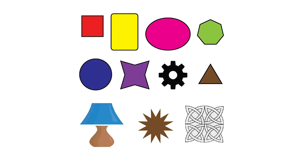Shape is one of the seven elements of art. Shape is defined by an enclosed line. Shape is also a two-dimensional or flat object, meaning that it has length and width, but no depth.